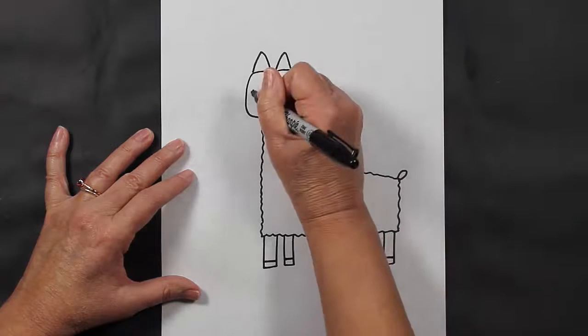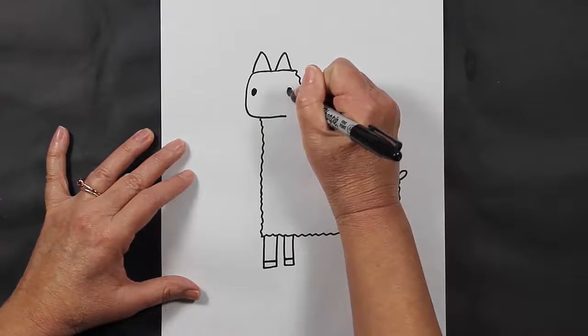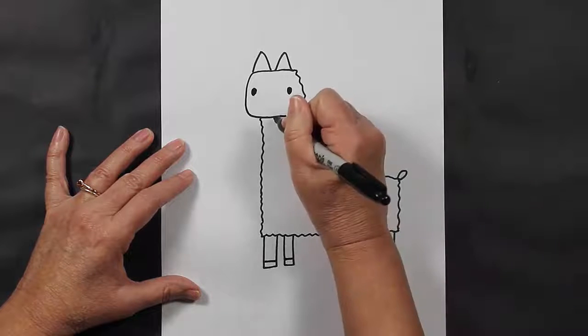Let's go back up here to his eyes. I like to make wide-set eyes, just some dots that are filled in. Let's make a little tooth.